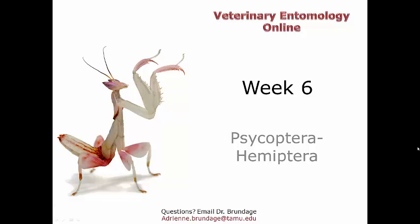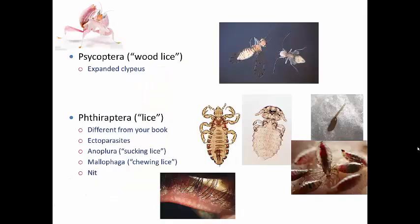Now let's look at some more interesting orders - the Psocoptera through the Hemipterans. Starting with the Psocoptera, these are the wood lice, bark lice, or book lice. 'Psoco' means rubbed or gnawed and 'ptera' means wings, which relates to the way that they feed.